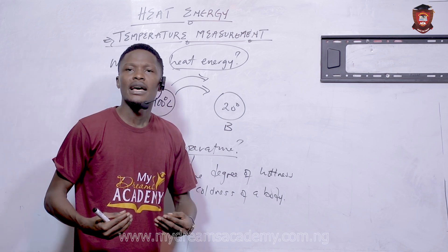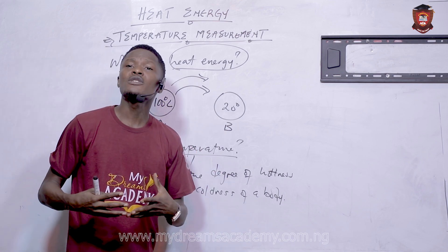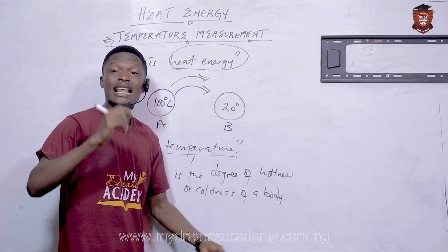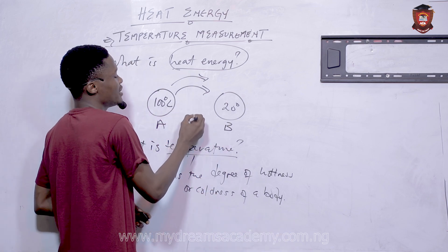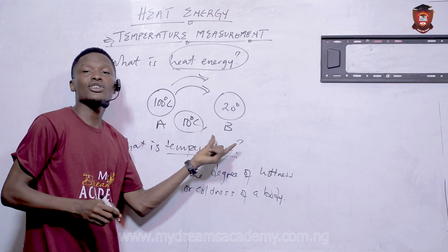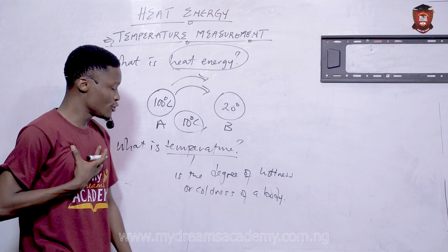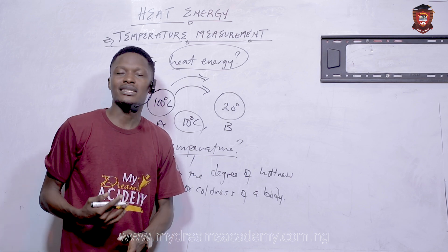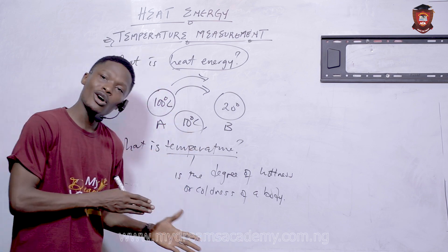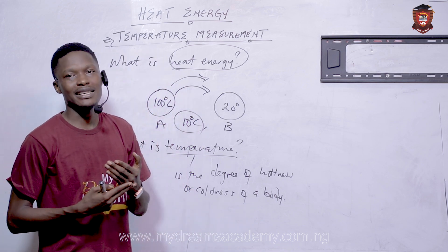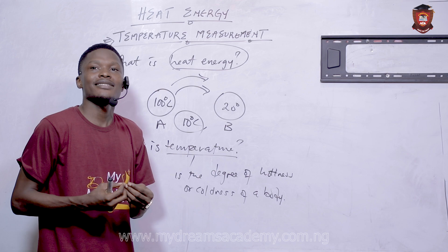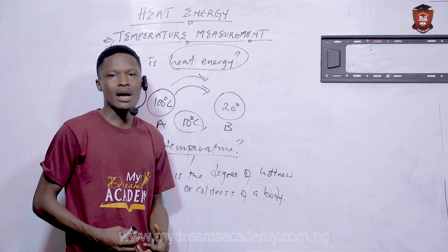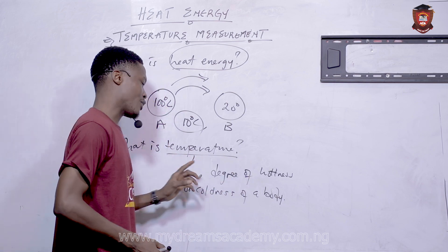As humans, we won't be able to give a precise value and say, for example, the temperature is 10 degrees Celsius. The only thing our body can do is tell us that something is hot or cold. When you touch something very cold you will know it's cold, and when you touch something very hot you will know it's hot. We are able to do that because of sensors in our skin that can sense these differences.